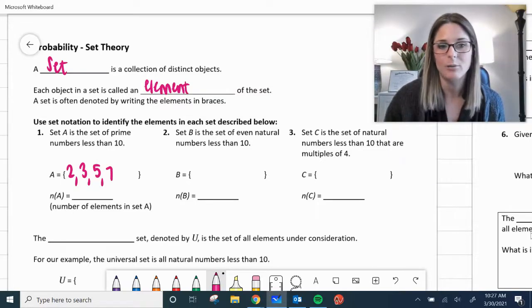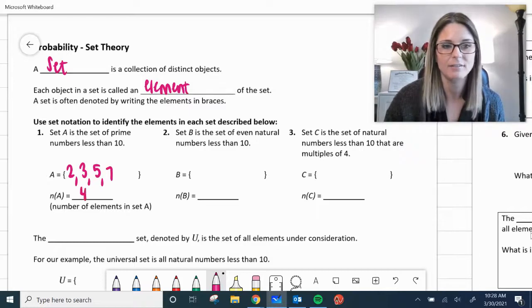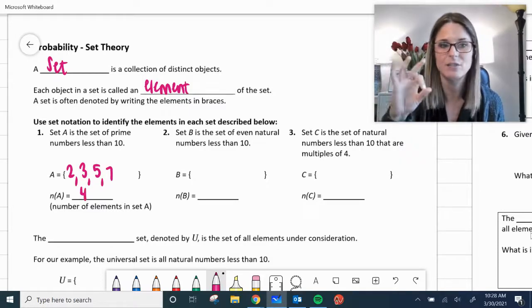n of A, so the number of elements that were in A, 4. There was 4 elements, 2, 3, 5, and 7 in set A.